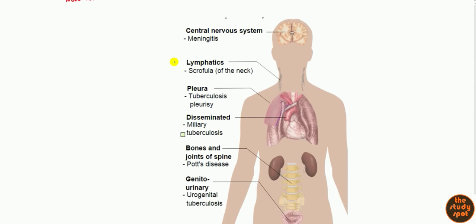Here's a diagram from Wikipedia. You can see here CNS can be affected, lymph nodes, the actual pleura, disseminated when it shoots out through the aorta and goes throughout the whole body, bones and joints, specifically the vertebra and the genitourinary tract.